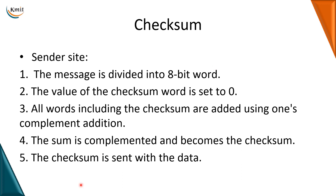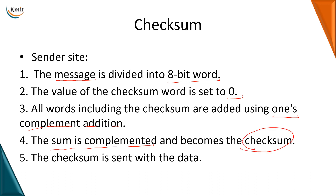At the sender side, the message to be transmitted is divided into 8-bit words. For example, a 32-bit message is divided into 8-bit words, giving us 4 words. The checksum word is initially set to 0. All 8-bit words are added using one's complement addition. The resulting sum is then complemented, and this complement is called the checksum. The sender then sends the message along with the computed checksum.